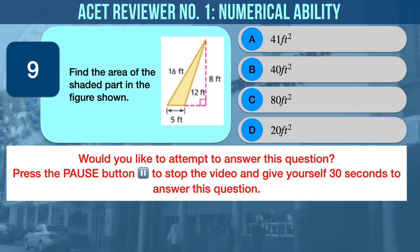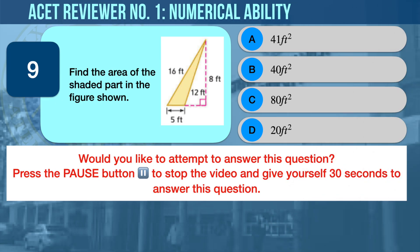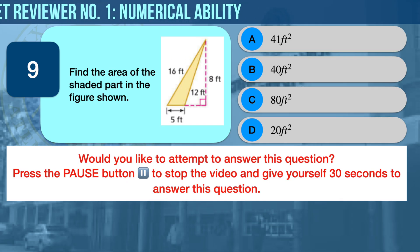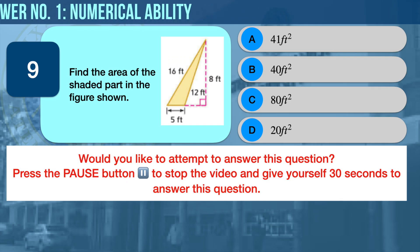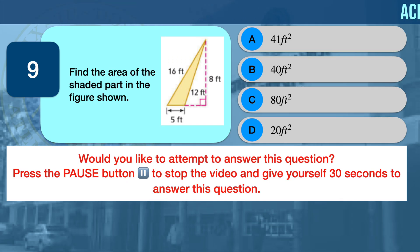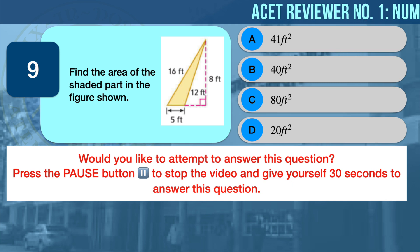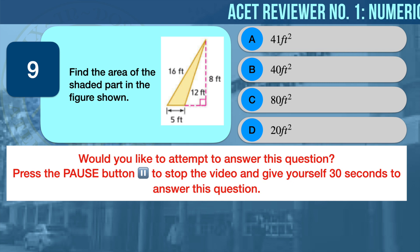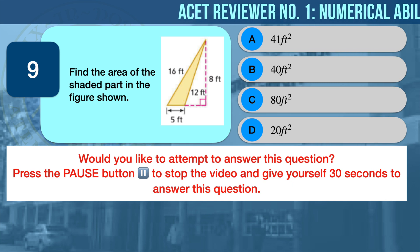Numerical Ability Problem Number Nine: Geometry. Find the area of the shaded part in the figure shown. A) 41 square feet, B) 40 square feet, C) 80 square feet, D) 20 square feet.